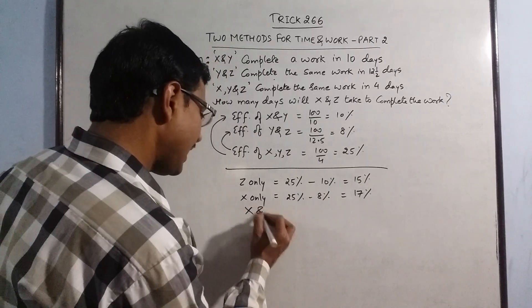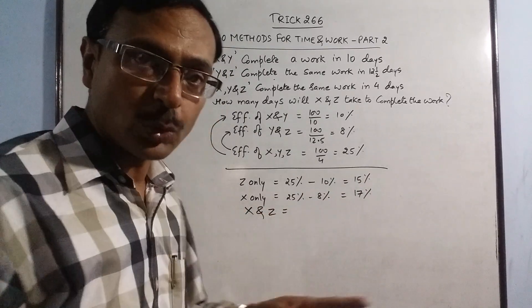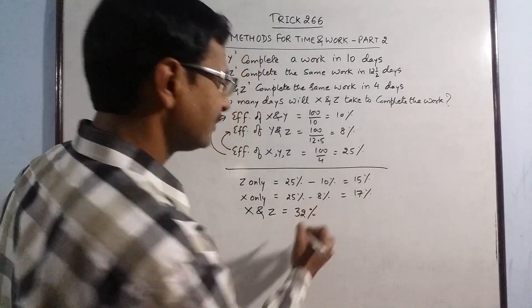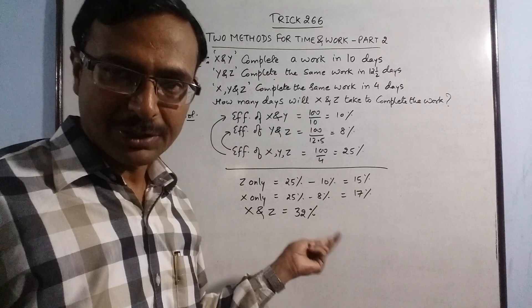So x and z that means when they work together the efficiency will be their sum. So this is 32 percent. The sum of 15 and 17 is 32 percent.